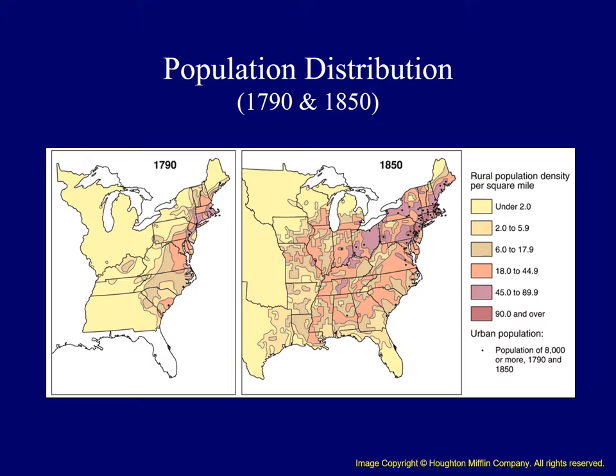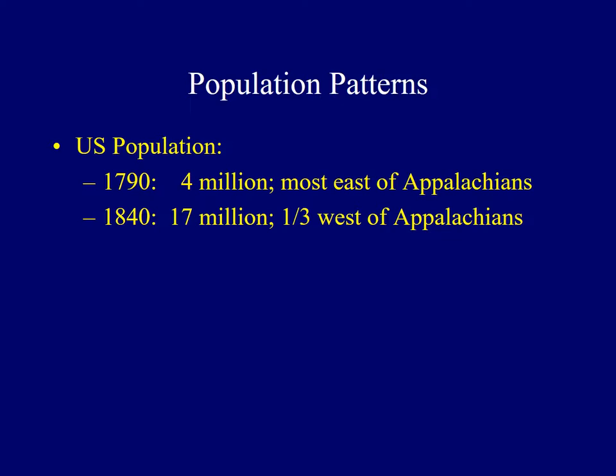These maps identify population distribution in the United States in 1790 and again in 1850. As you can see with the map on the left, there were very few areas with high population density outside of states along the Atlantic coast. The map on the right shows that by 1850 there were regions of high population densities in the Northeast and parts of the Midwest. The Ohio River Valley, which included the old Northwest Territory, saw tremendous growth in population as people sought fertile land to establish farms.